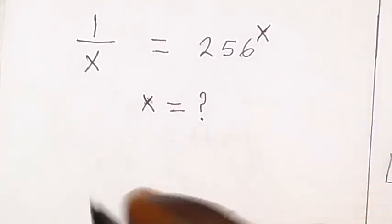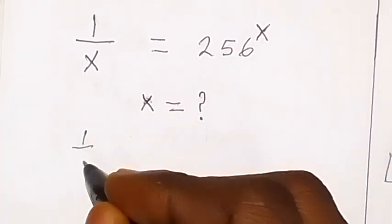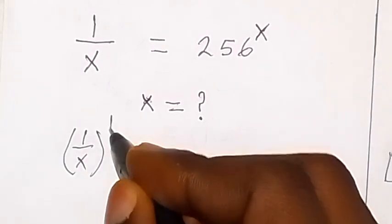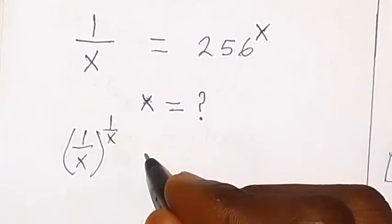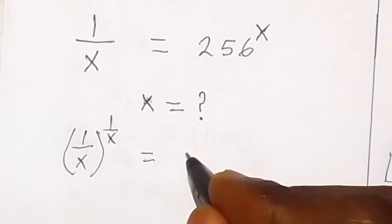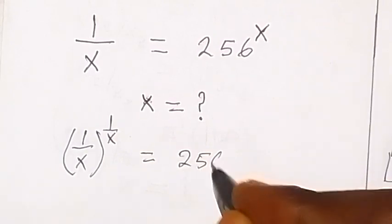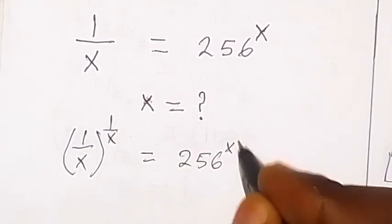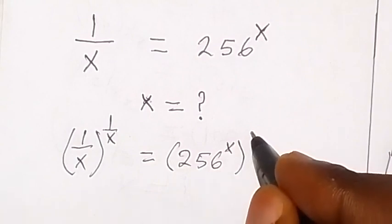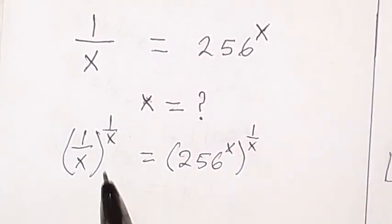So as to cancel this x here, we now have 1 over x raised to power 1 over x equals to 256 raised to power x, then everything also raised to power 1 over x. So we have multiplied the power on both sides with 1 over x.